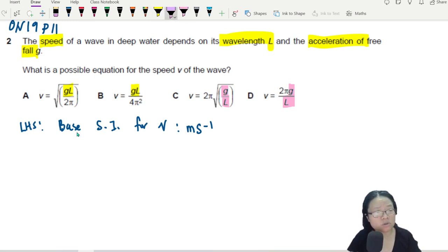Teacher, we don't have to care about the 2π, 4π squared, all that, no need. Because what is this 2π, 4π squared, got unit or not? No need. We don't care for unit analysis. So 2 and π or whatever, this one are all unitless. So don't care about them.